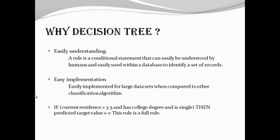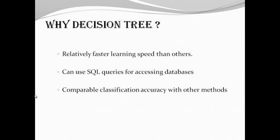Why Decision Tree? Decision Trees can be easily understood. A rule is a conditional statement that can be easily understood by humans or easily used within a database to identify a set of records. It can be easily implemented. Easy implementation for large data sets when compared to other classification algorithms. It is relatively faster learning speed than others. It can use SQL queries for accessing databases. Comparable classification accuracy with other methods.